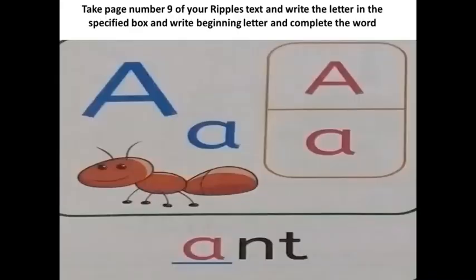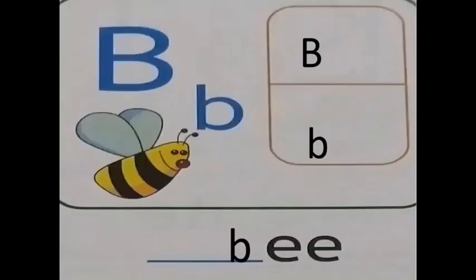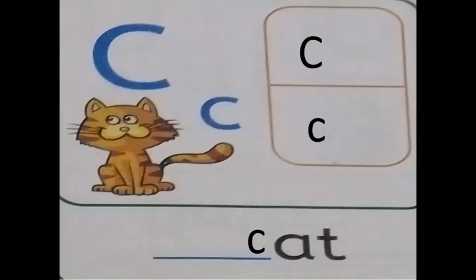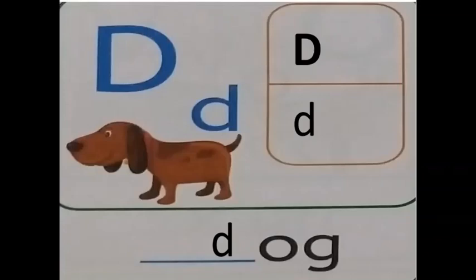We'll do another activity also, children. Turn to page number 9 in your Term 1 textbook. The activity here is you have to write the capital letter, small letter, and the starting letter of the word given. The first one is done for you: capital A, small a, and A. Next one is capital B, small b, and B. Next one is C — you have to write capital C, small c, and C — cat. Next, capital D, small d, and you should fill the blank with D. Okay children, now you have to take a photo of both the activities you have done and post it in the Google Classroom. Thank you, children.